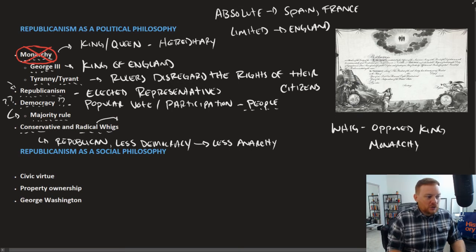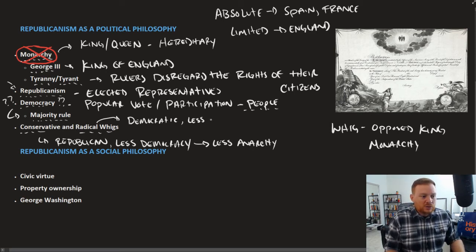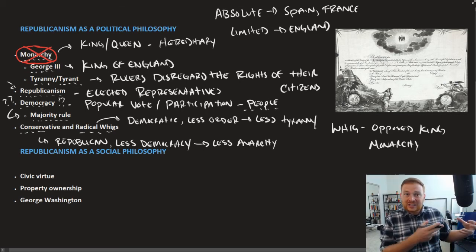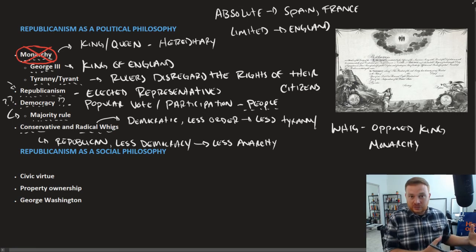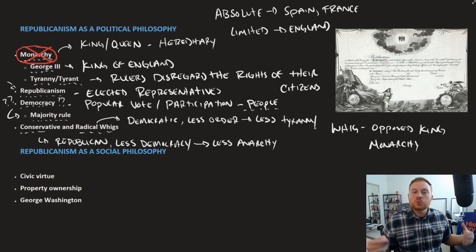Radical Whigs, on the other hand, favored a more democratic system. What they wanted to avoid was tyranny. You don't want too few elected representatives, because once you put a lot of governing power in very few hands, it's very easy for those rulers to be tyrannical with it.